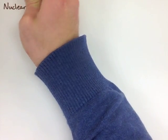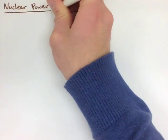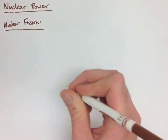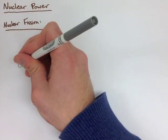Right now we're going to look at nuclear power. Nuclear power is formed by nuclear fission. Fission is the breaking up of an element.